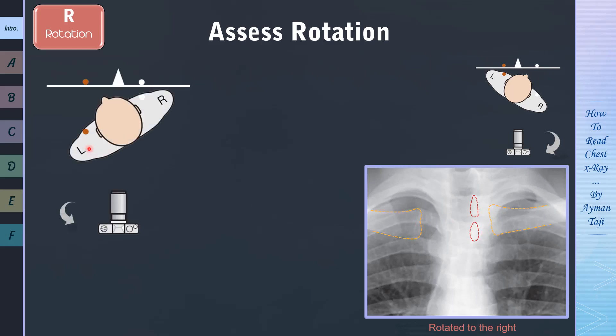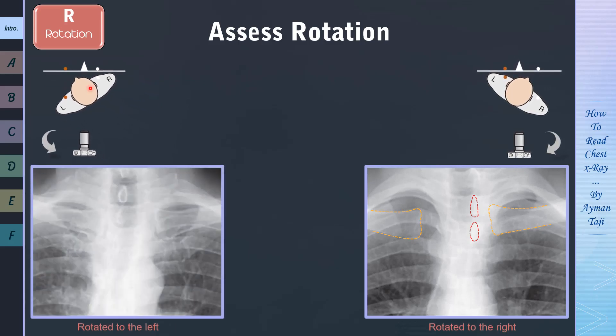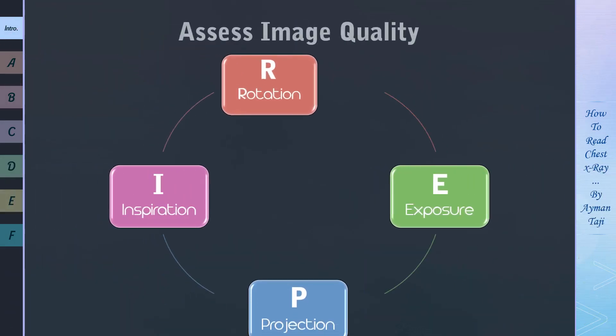And if the patient is rotated to the left, then the medial end of the right clavicle will be presented closer to the spinous process than the left one, as in this X-ray. Here is the medial end of the left clavicle, and here is the medial end of the right one, and here are spinous processes. We can see clearly how spinous processes are closer to the medial end of the right clavicle than the left one, so the patient is rotated to the left. And now, let's move on to inspiration.